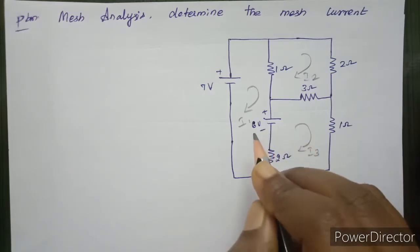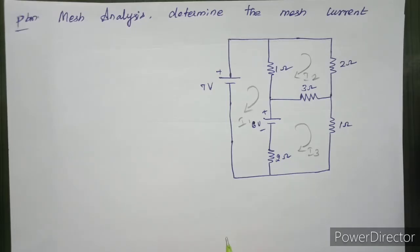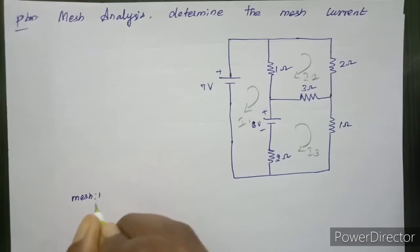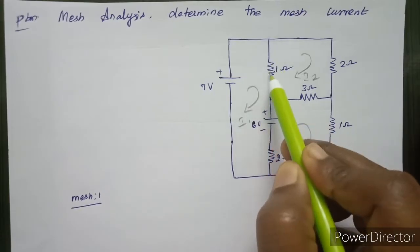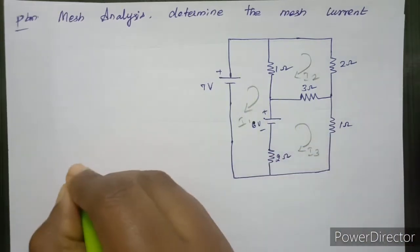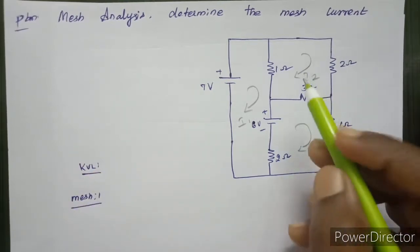This is the 1 ohm resistor. We have already discussed that there is always a voltage drop across a resistor. We will apply KVL: voltage rise equals voltage drop.